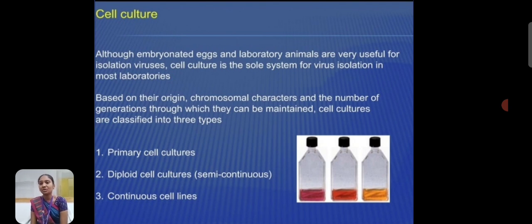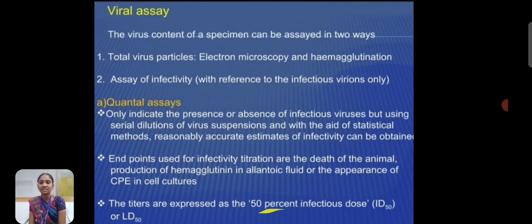Based on their origin, chromosomal characters, and the number of generations through which they are maintained, cell cultures are classified into three types: primary cell culture, diploid cell culture, and continuous cell culture.